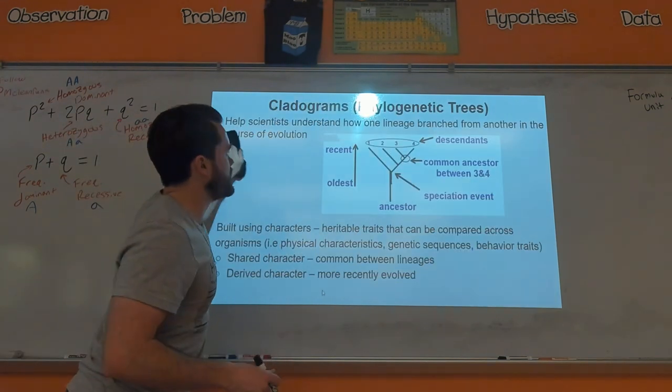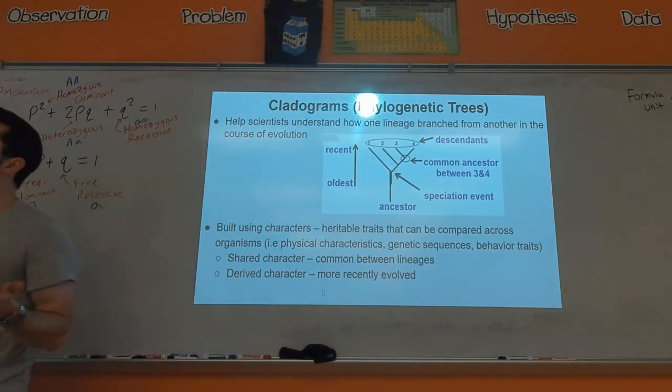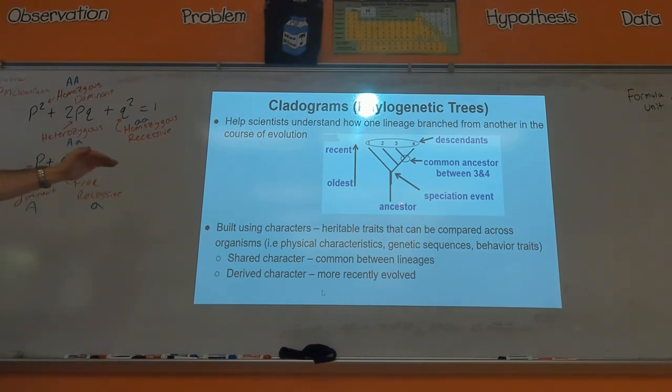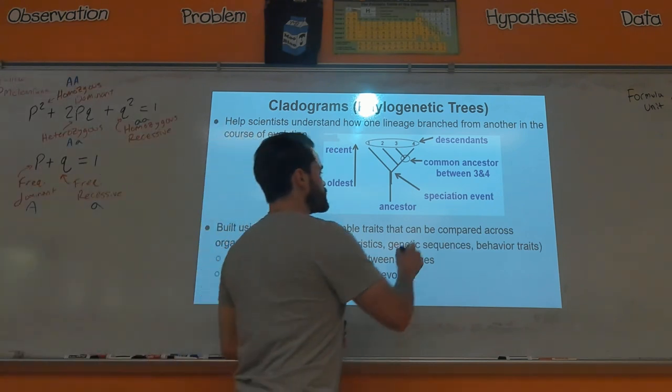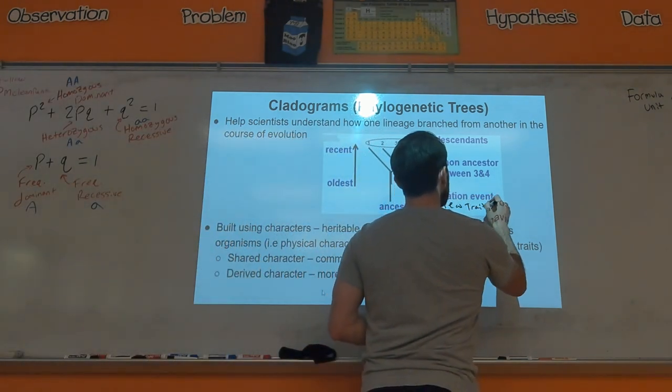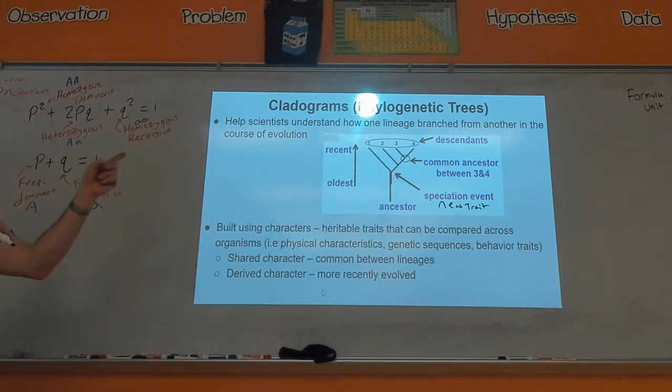How you would interpret a phylogenetic tree: the ancestor, the oldest ancestor, will always be towards the bottom, and then each time you hit a node, one of these branch points, each branch point represents a speciation event. Some sort of event, usually this is a new trait, something new happens that will then lead to a different descendant evolving.